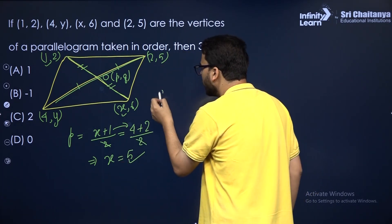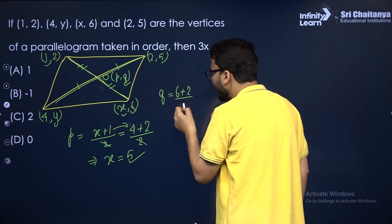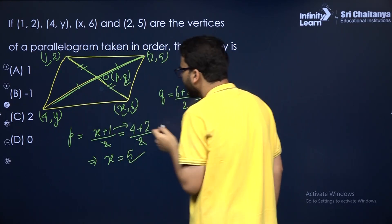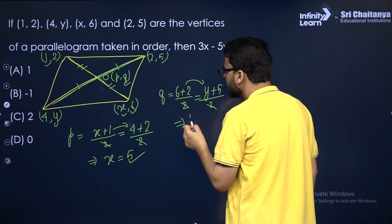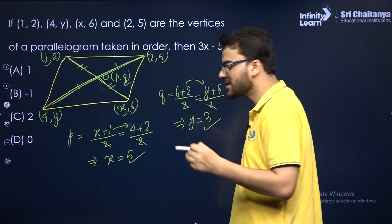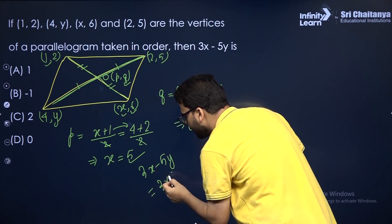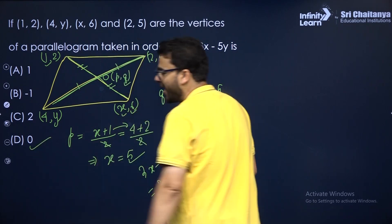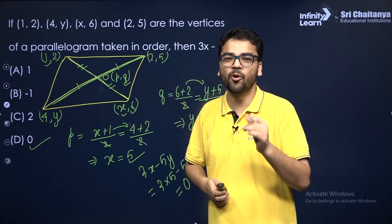In the same manner, using the midpoint formula for Q: Q equals (6 + 2)/2 from one diagonal, and Q equals (y + 5)/2 from the other diagonal. Setting these equal gives y equal to 3. Now 3x minus 5y equals 3 times 5 minus 5 times 3, which is 15 minus 15, that is 0. I hope it is clear to you.